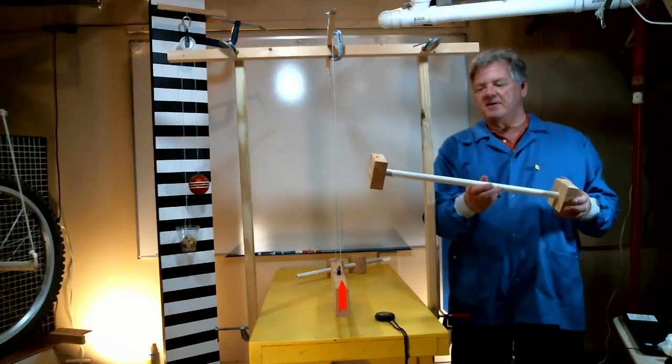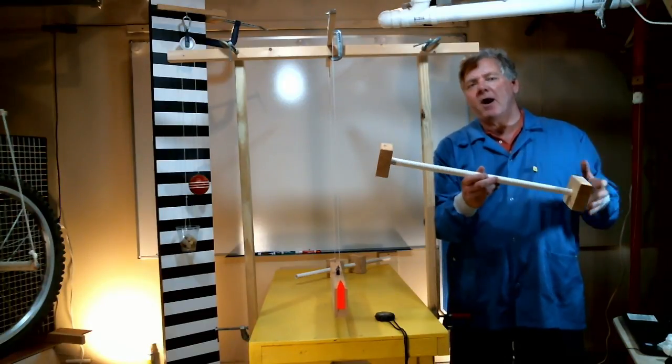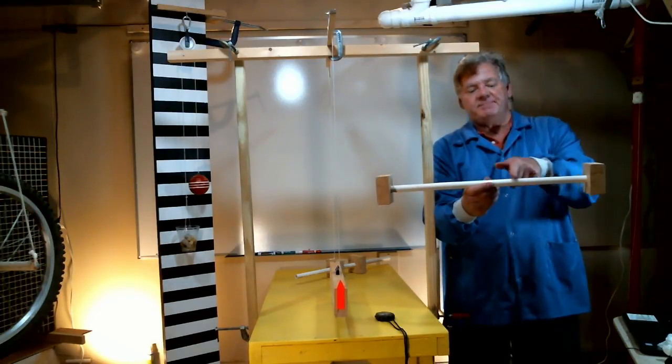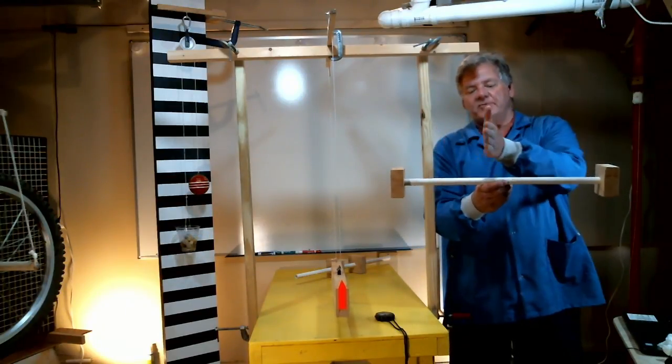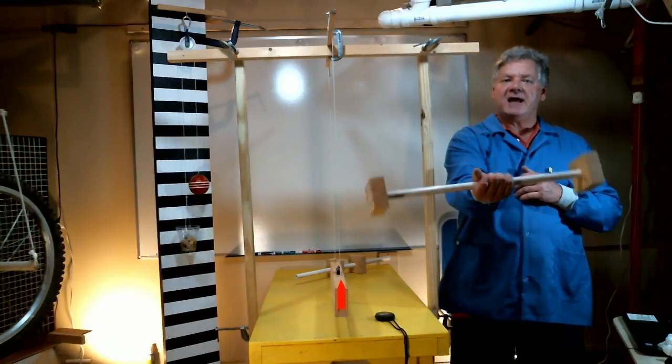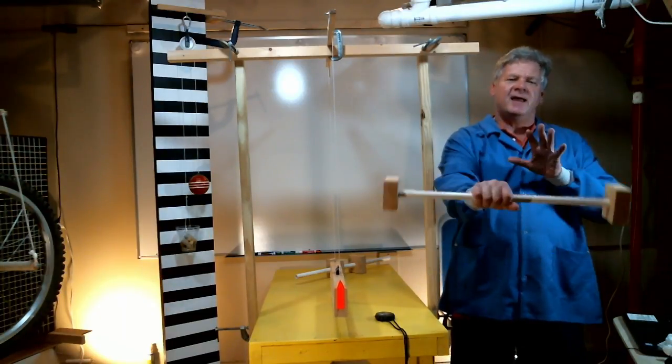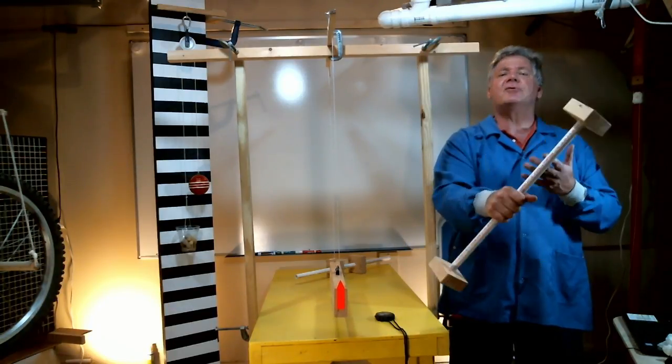All right what I have here is a simple homemade rotational inertia rod or an MOI rod. Now what it is is essentially a piece of PVC pipe with two blocks of wood attached to the ends and the blocks of wood are equal distance from the center of my PVC pipe. So what I can do is by hand twist this back and forth and kind of get a feel for how the rod behaves and get an idea of what the inertia feels like.